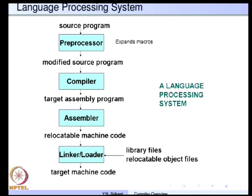A compiler takes a clean, expanded source program in a high-level language such as C or C++ and outputs an assembly program for the particular machine. The target assembly program is input to the assembler, which takes the mnemonics in assembly language and translates them to actual binary machine code. Finally, the assembler output — called relocatable machine code — is combined with library files and relocatable object files from other sources by the linker and loader to produce the target machine code which can run on a particular machine.